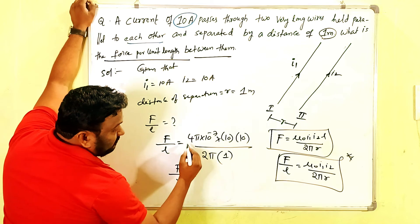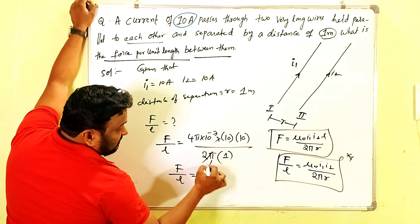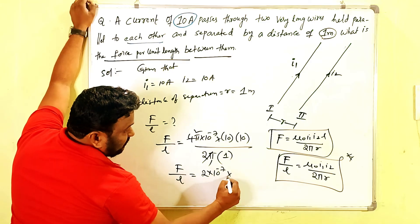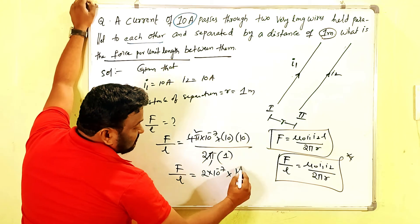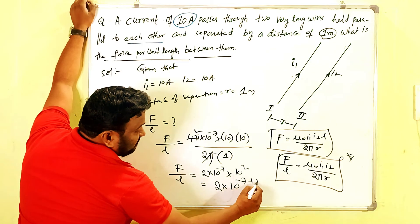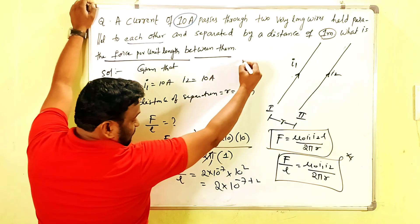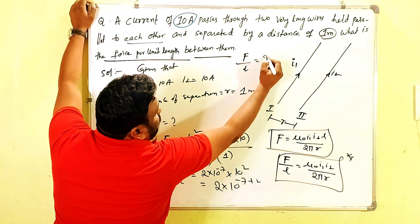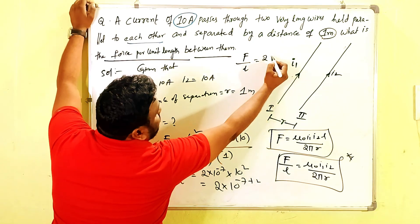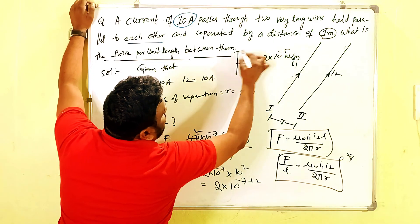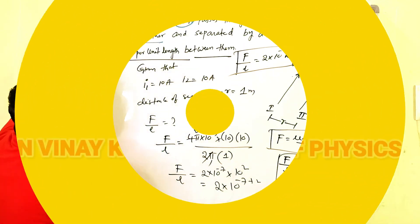Then what I get: F/L equals 2π cancels, so 2 × 10⁻⁷ × 10 × 10. Then what you get? 2 × 10⁻⁷⁺² = 2 × 10⁻⁵. So F/L equals 2 × 10⁻⁵ newton per meter.